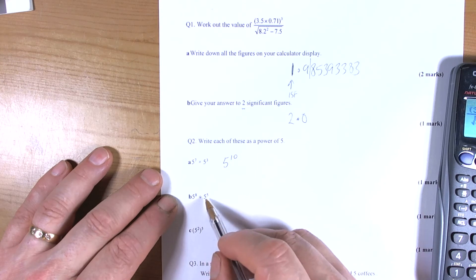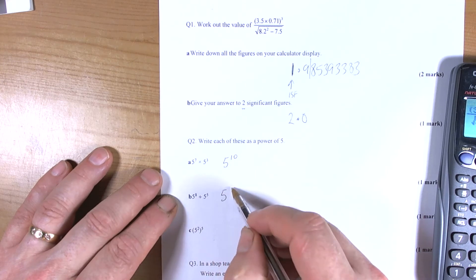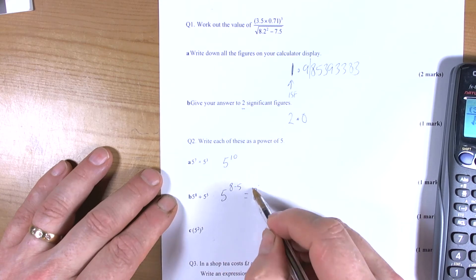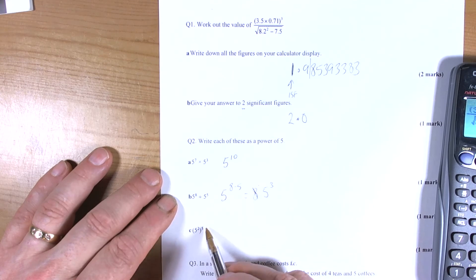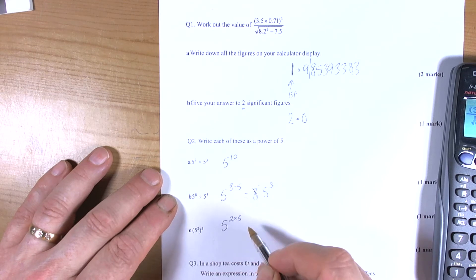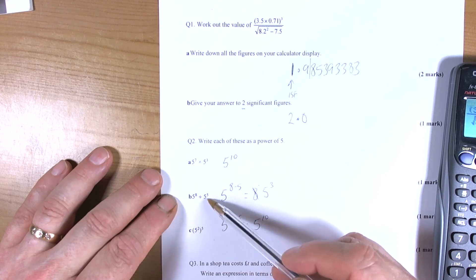When we're dividing with the same base numbers then we take away the powers. So this becomes 5 to the power of 8 take away 5 which becomes 5 to the power of 3. And then when we're raising a power to a power then we times the 2 power numbers. So 5 to the power of 10. Now remember these only work because they've got the same base numbers of powers of 5.